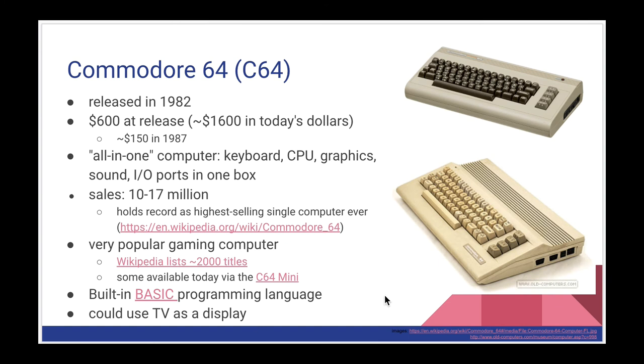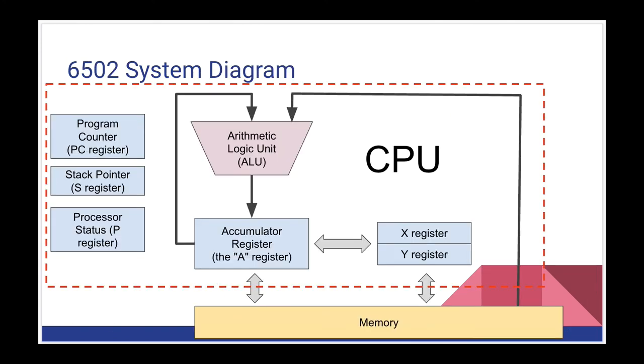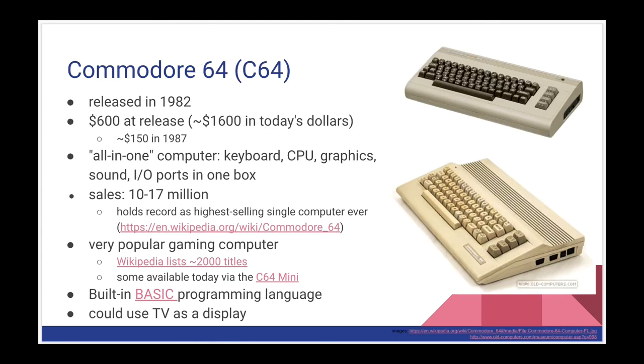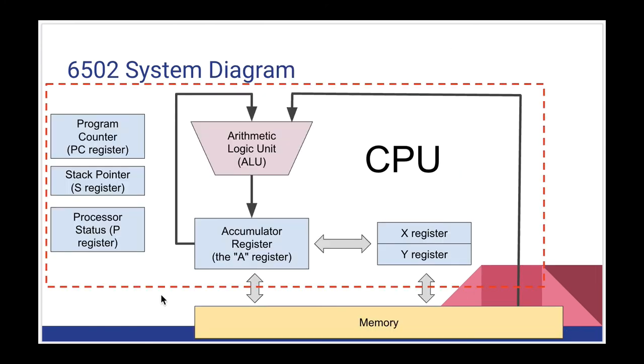It also had a built-in programming language called BASIC, similar to other machines of the era. And more importantly, it could use a TV as a display. So you didn't need to buy a separate monitor for another $200 to make this work. You could plug it into any TV that you had at home. The reason we're talking about the Commodore 64 is that the emulator we're going to use to run our programs in this course is based on the Commodore 64 and gives us all of the emulated versions of all the hardware peripherals that were available to the 64 users.